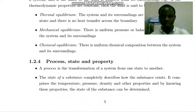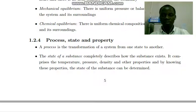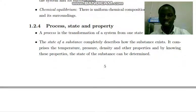The next terminology is a process. A process refers to transformation of a system from one state to another. The state of a substance completely describes how the substance exists. It comprises the temperature, pressure, density and other properties, and by knowing these properties the state of the substance can be determined.